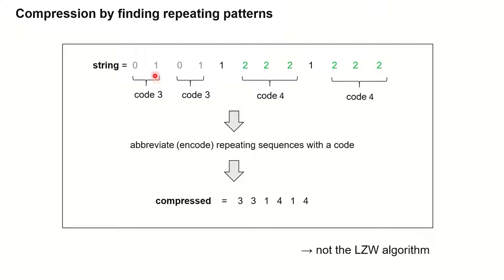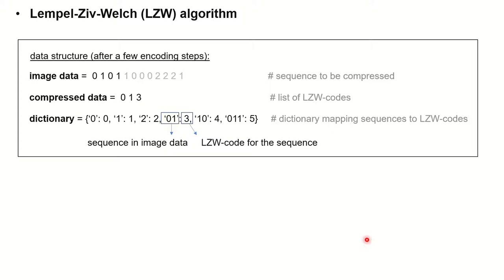If you have repeating sequences, you can save a lot of space by doing something called encoding — you represent these repeating sequences by a code. So zero and one in a row is now represented by code number three, and these three numbers in a row is represented by code number four. If you do that encoding, the compressed version of that string looks like this. Note that's not the LZW algorithm that I'll explain on the next slide.